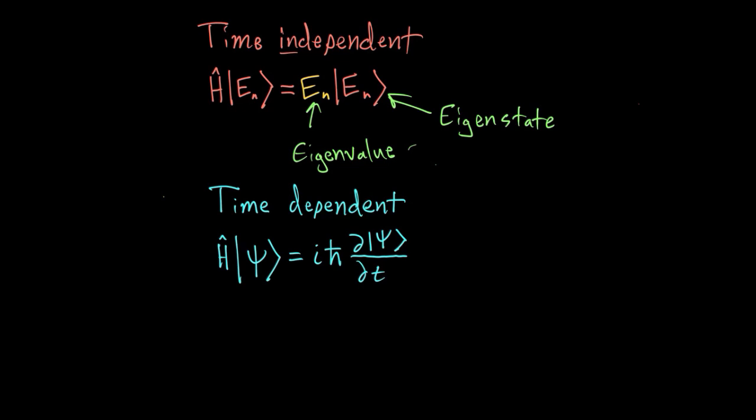and then you can use those to figure out how the state changes with time. And so you would rewrite your state, whatever the initial state is, and you might specify that it's at time equals zero. And then what is this state? Well, it'll be some combination of these eigenstates.